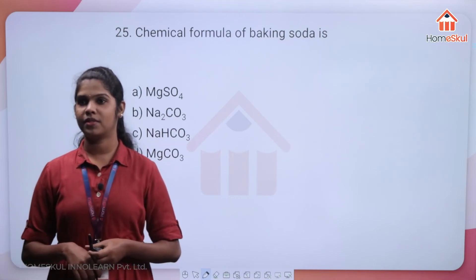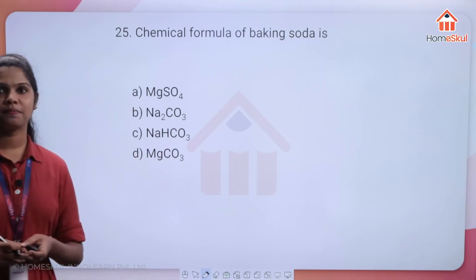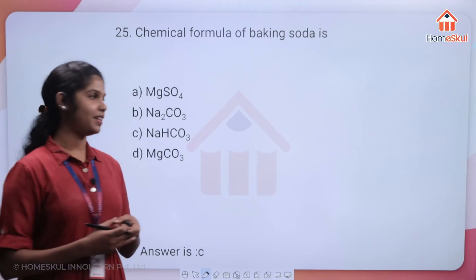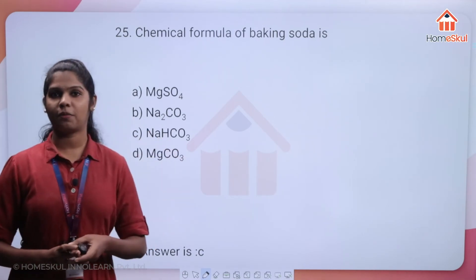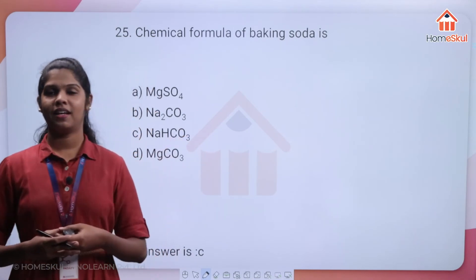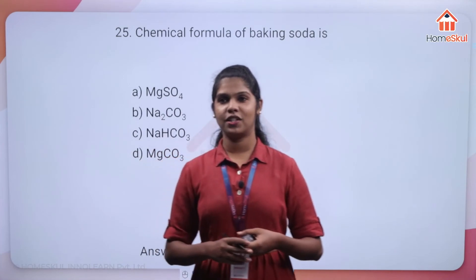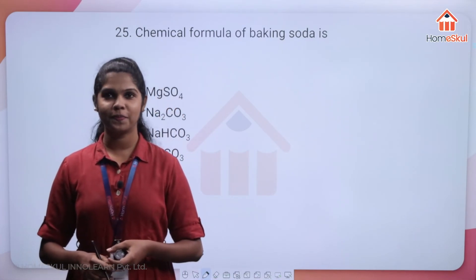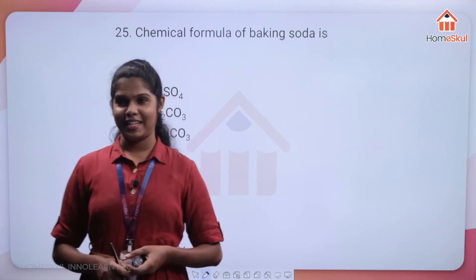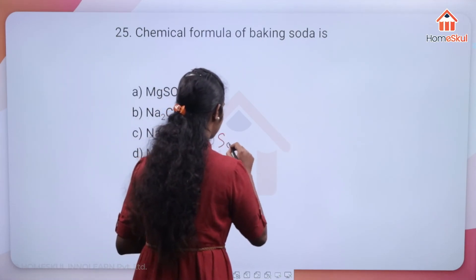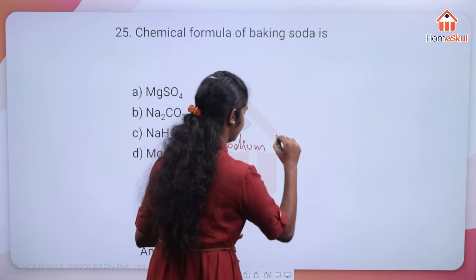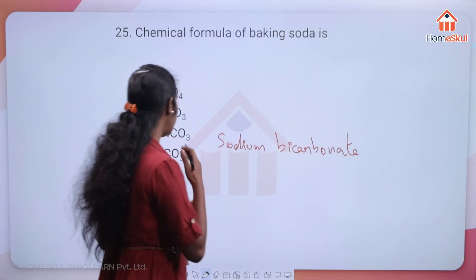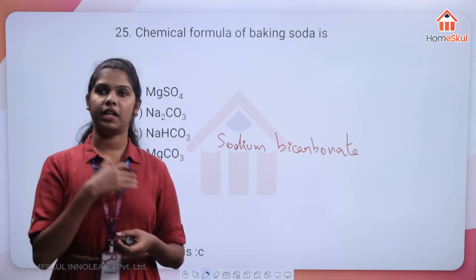Option C — NaHCO3 — is the correct answer. This is sodium hydrogen carbonate, also known as sodium bicarbonate. We can refer to NaHCO3 in two ways: sodium hydrogen carbonate or sodium bicarbonate.